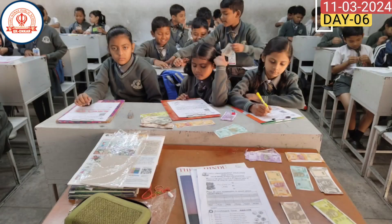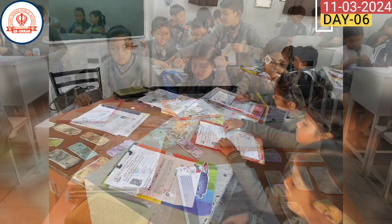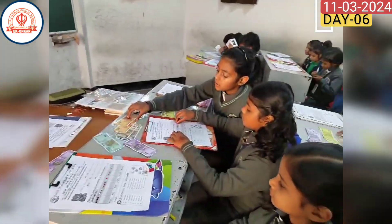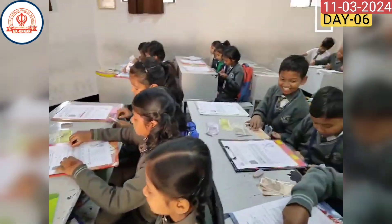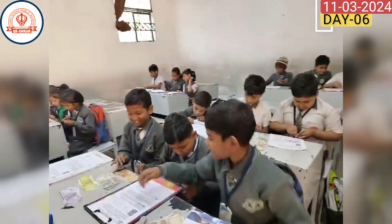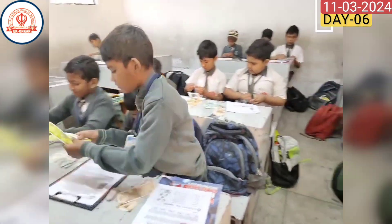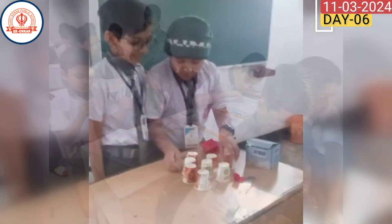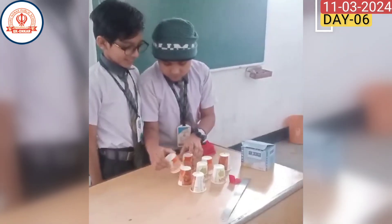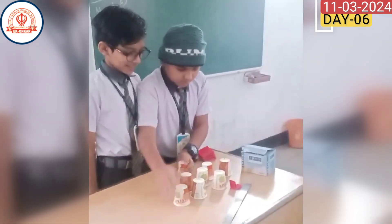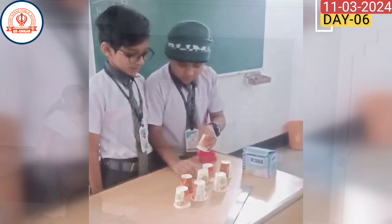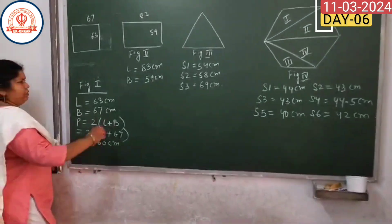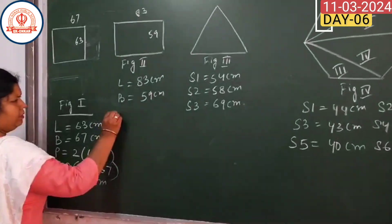In class three, mathematics sessions covered money denomination. For class four, English sessions were filled with fun activities, complemented by exploring the concepts of area and perimeter in mathematics.